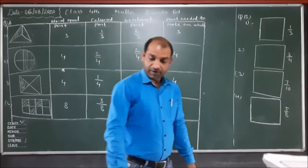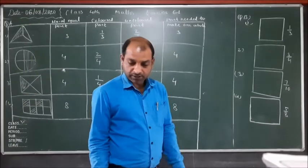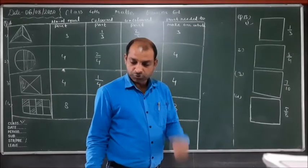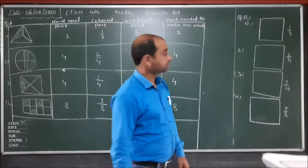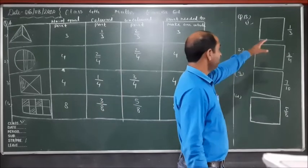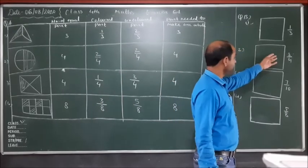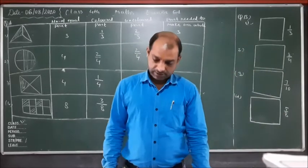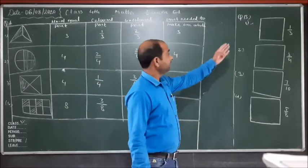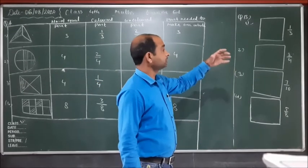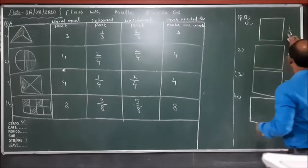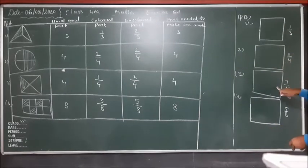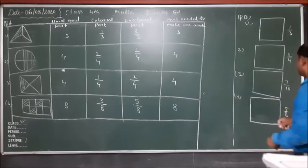Question number B: Divide each square into equal parts and color to suit the fraction. The fractions given are one upon three, three upon four, seven upon ten, and five upon eight.